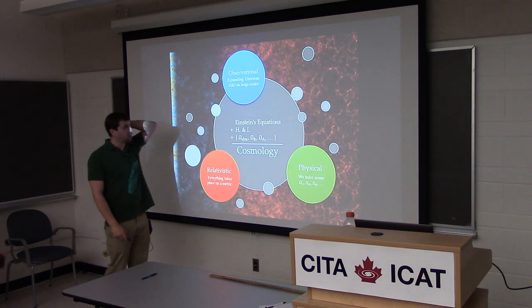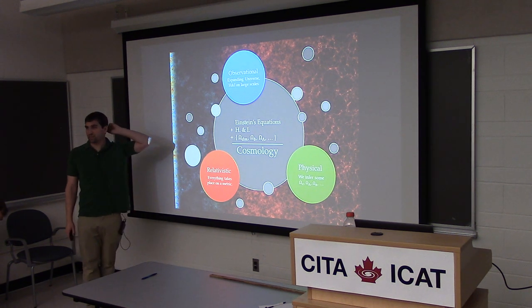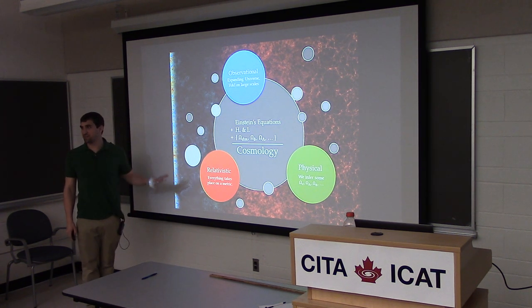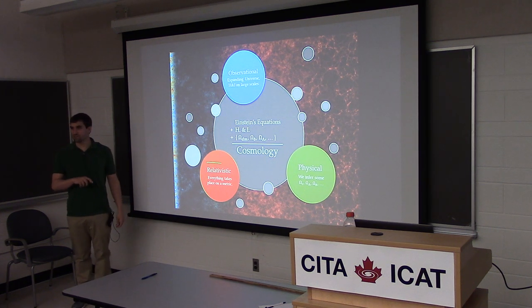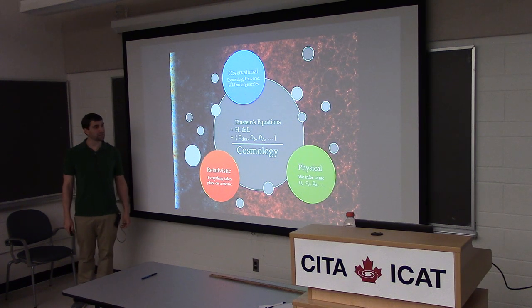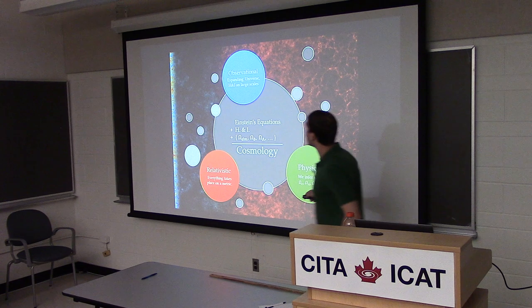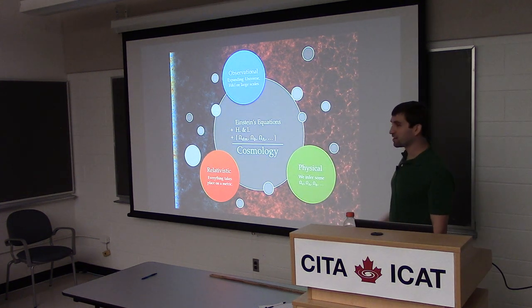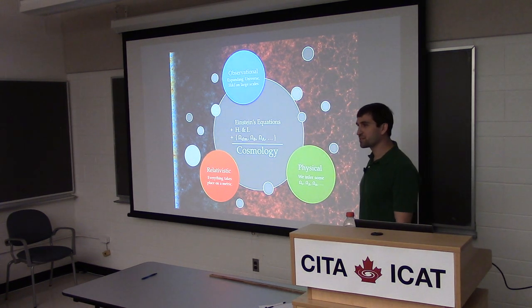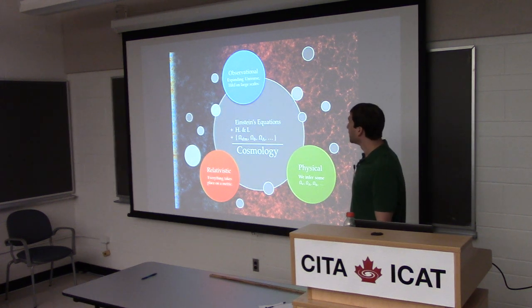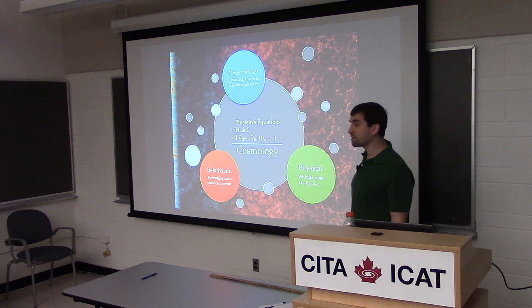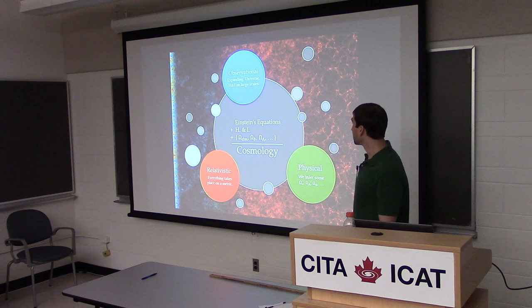I'd like to start by dividing cosmology into a few semantically distinct areas, just to draw a circle around the particular areas I'll be focusing on, which are in relativistic cosmology. Starting with observational cosmology — this is the study of what exactly we see in the universe, where we see it, and what it's doing. In particular, we see that our universe is expanding, and we see that on large scales it looks homogeneous and isotropic.